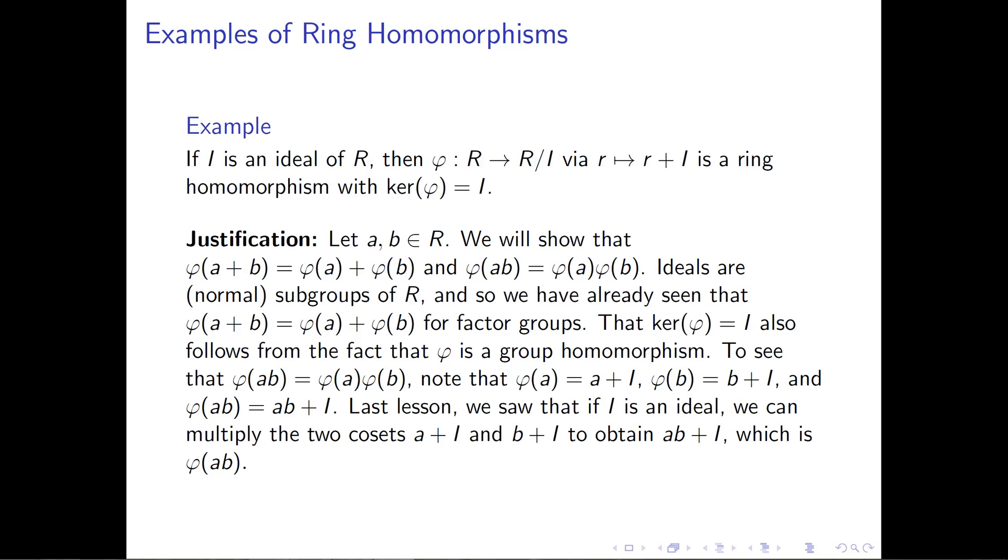What we need to show is three things. We need to show that this map we've defined respects the addition of each of these rings. We need to show that it respects the multiplication of each of these rings. And we also need to show, since I'm claiming that the kernel of this map is I, we need to show that as well.